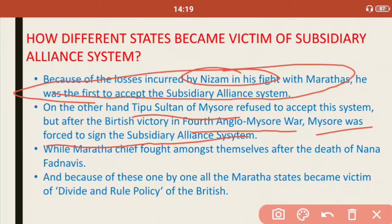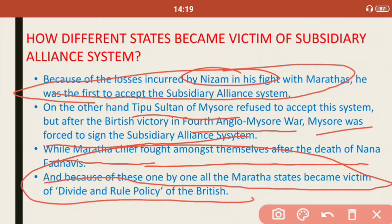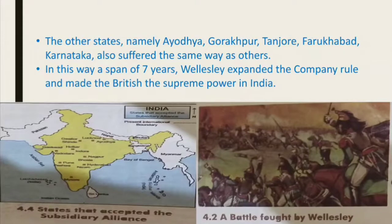Meanwhile, Maratha chiefs fought amongst themselves — like the cats in the story — after the death of Nana Furtnavis. Because of this, one by one all Maratha states became victims of the divide and rule policy of the Britishers. Other states — namely Ayodhya, Gorakhpur, Tanjore, Farrukhabad, and Karnatak — suffered the same way. In this way, within a span of seven years, Wellesley expanded the East India Company's rule and made the British supreme in India.